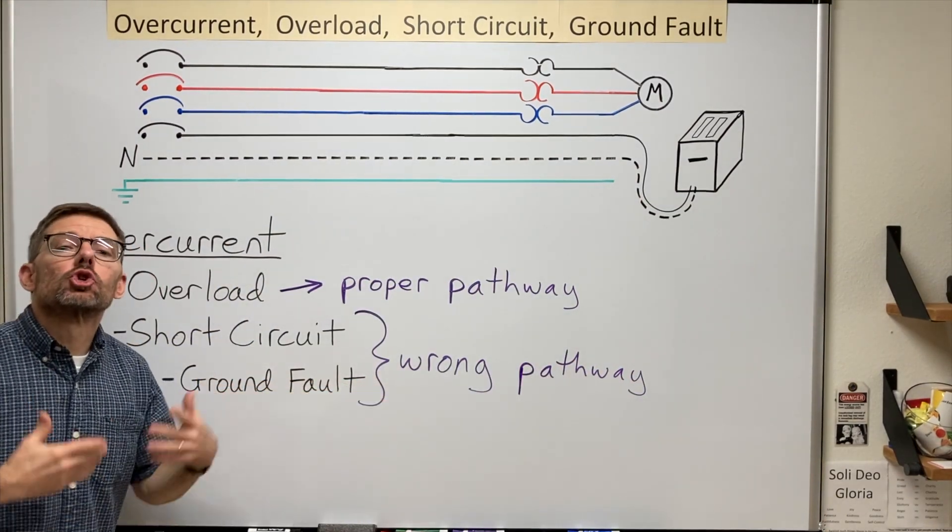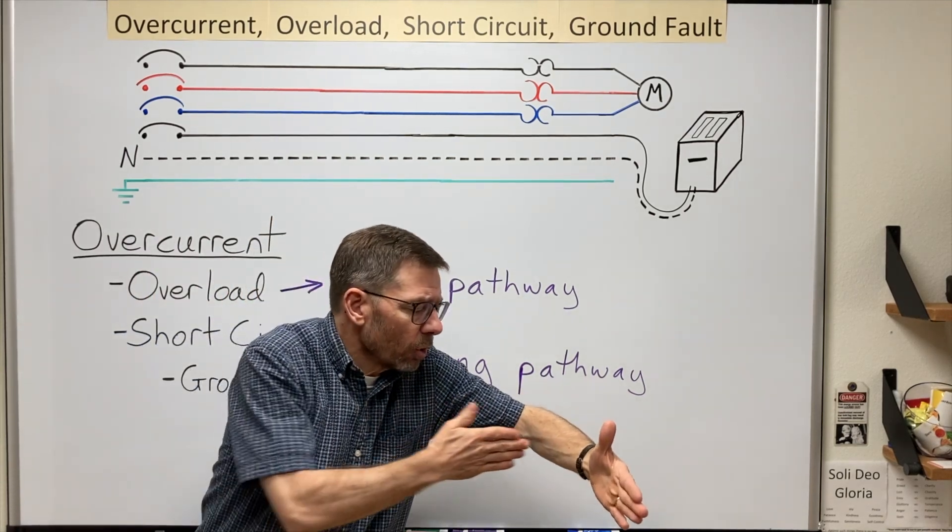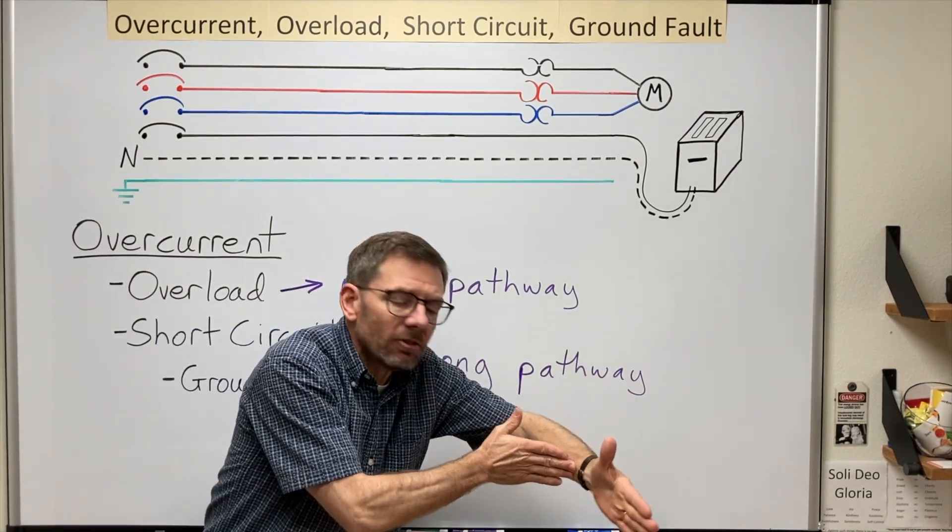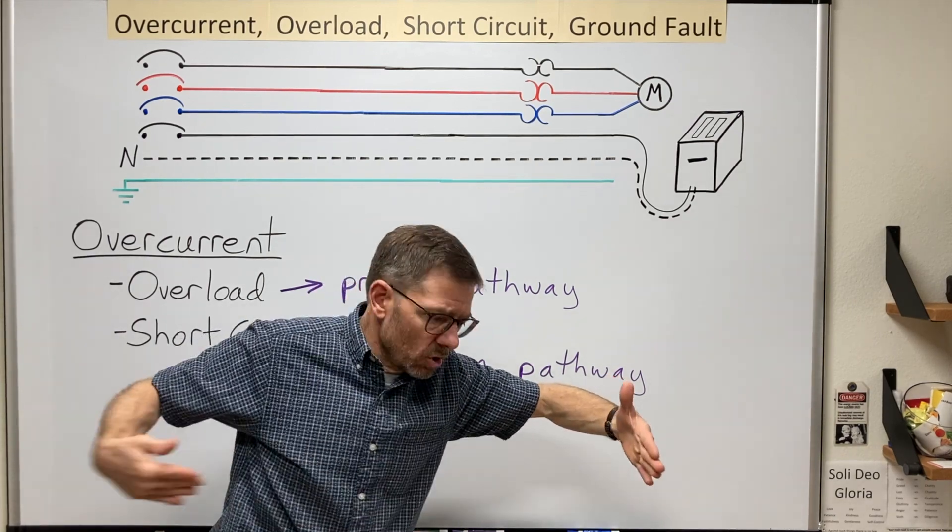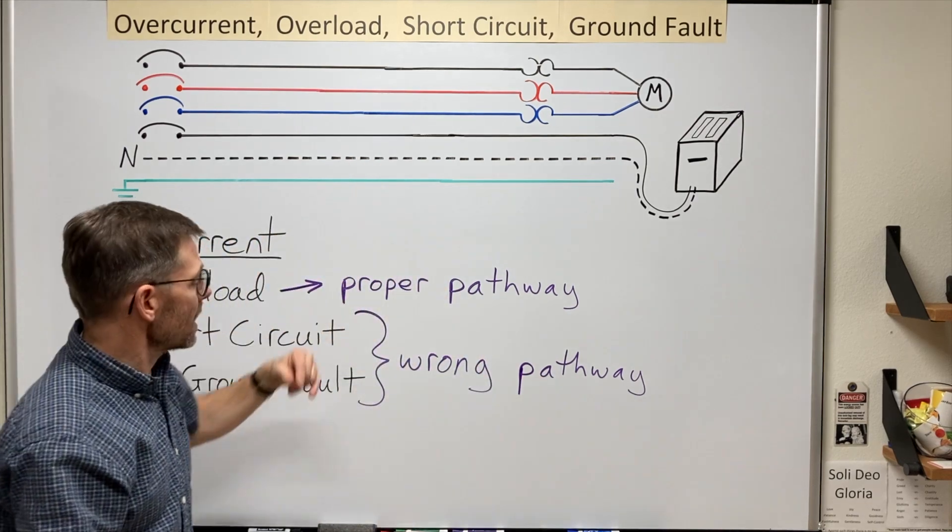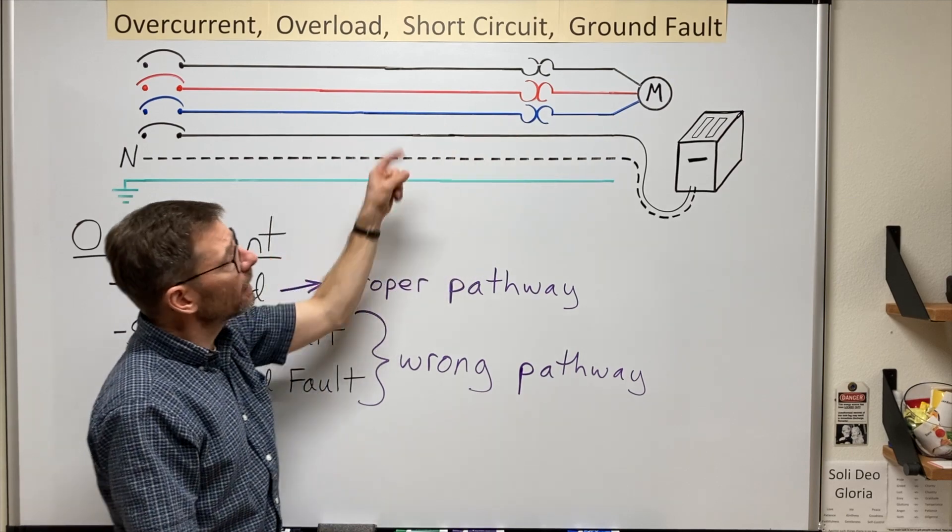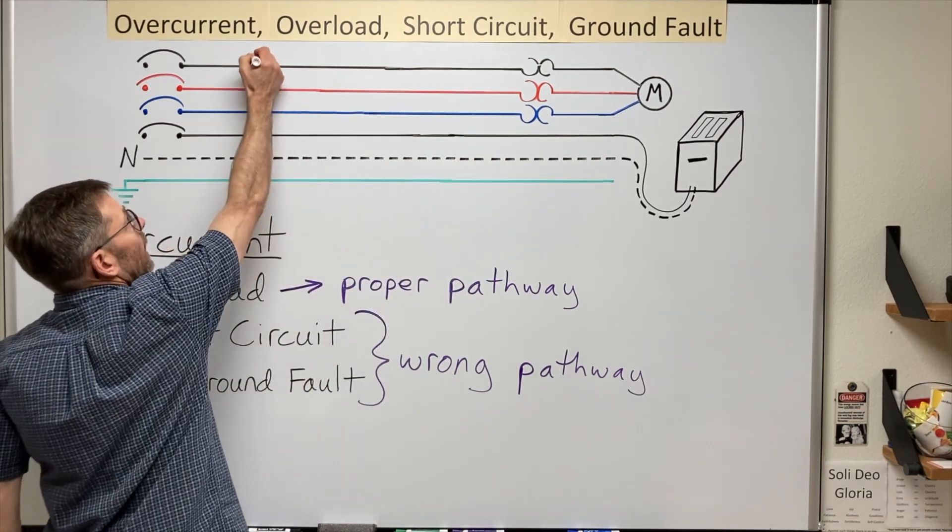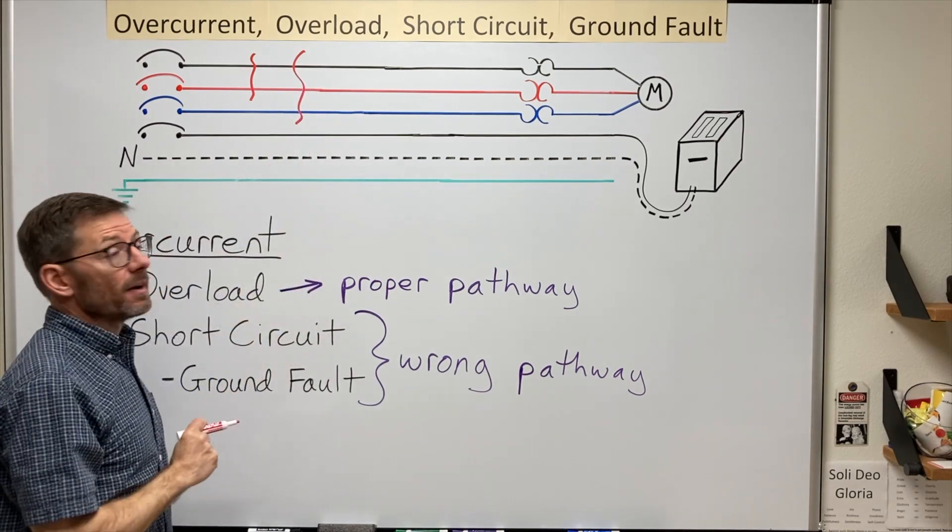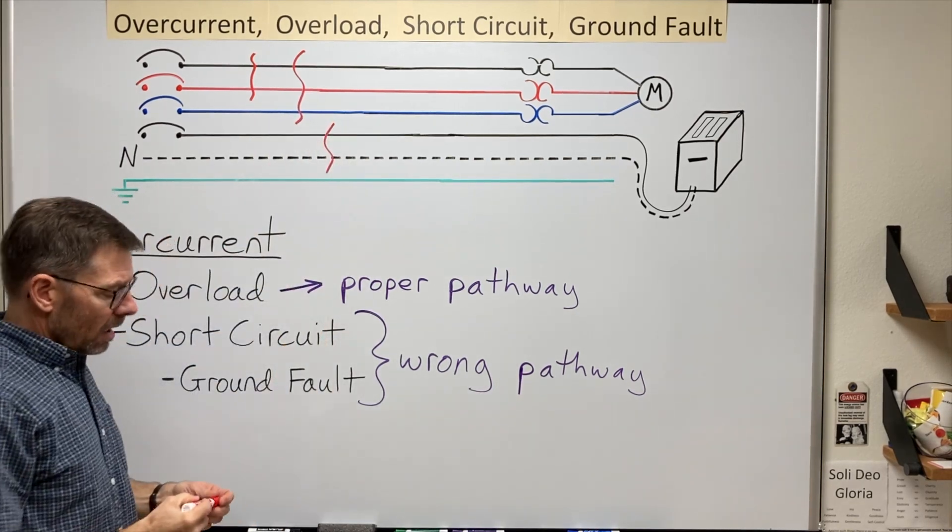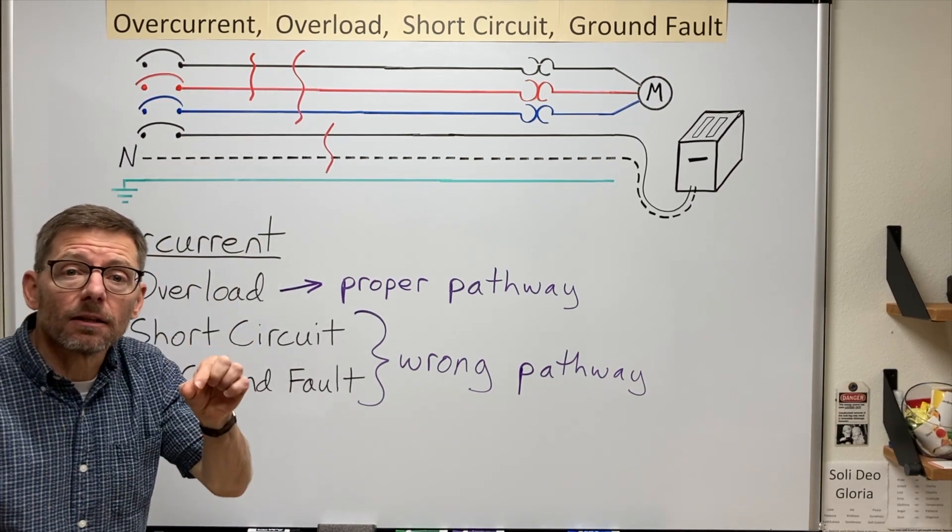Here the current is taking a shortcut. Think of driving down the road, and instead of going all the way down to the light and waiting to turn right, you just decide, nah, I'm going to cut through the gas station or the parking lot, whatever's there. The current is doing the same thing. Instead of going through the load and back, it's just taking a shortcut. It can be line to line, or maybe line to line to line in a three-phase system, or line to neutral.